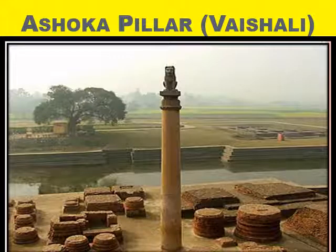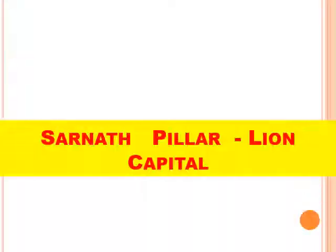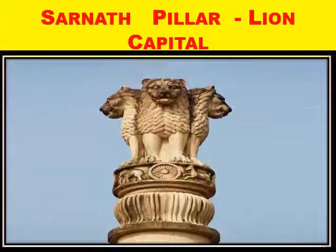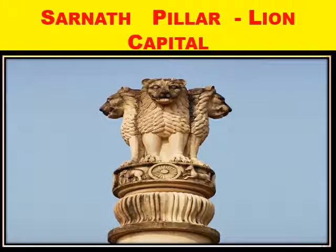Here we can see the Ashoka pillar at Vaishali — a beautiful pillar with a lion at the top. There is also the Sarnath pillar lion capital, which has been adopted as the national emblem of India. This concludes part 1 of the chapter. In the next part we will discuss the spread of Buddhism during Ashoka's reign, as well as Mauryan art and the decline of the Mauryan Empire.